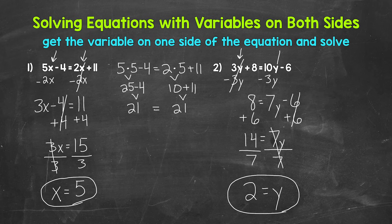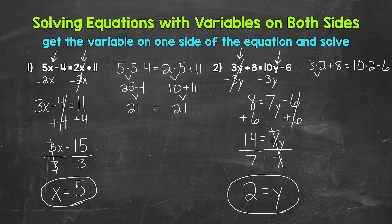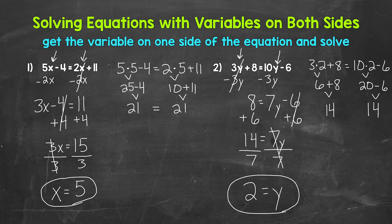Now let's check that by plugging it in for y. We have 3 times 2 plus 8 equals 10 times 2 minus 6. Starting with the left side: 3 times 2 gives us 6, and 6 plus 8 is 14. For the right side: 10 times 2 gives us 20, and 20 minus 6 is 14. We get 14 on both sides — we are correct. y equals 2.